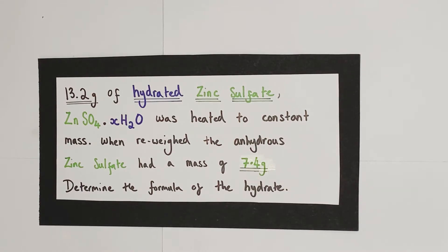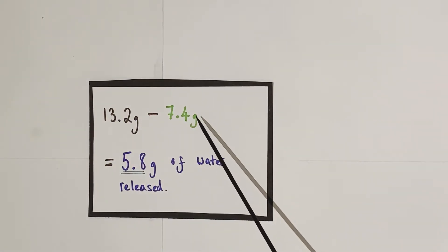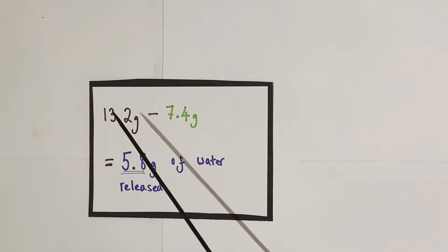So if we take away the mass of the anhydrous salt without the water from the mass of the hydrated salt with the water, we're left with the amount of water which must have been released, which is 5.8 grams of water in the form of steam which was driven off upon heating during this experiment.